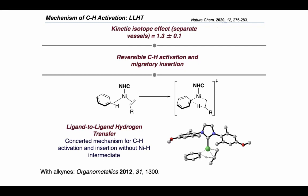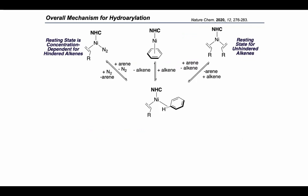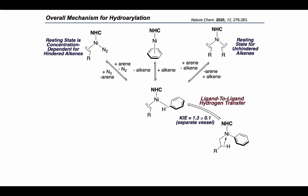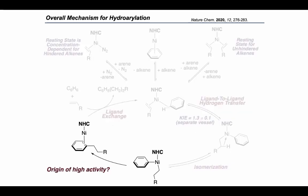LLHT has previously been proposed in the hydroarylation of alkynes with phosphine-ligated nickel catalysts. To summarize the mechanism for the hydroarylation based on our experimental results: there are a variety of arene- or alkene-bound resting states that exist in solution based on the identity and concentration of the alkene reactant. These all eventually funnel into a mono-alkene mono-arene complex, which undergoes LLHT to form a nickel(II) complex. This nickel(II) complex can isomerize to a T-shaped geometry and then undergo rate-limiting reductive elimination to form the carbon–carbon bond. The alkyl-arene product then dissociates to close the catalytic cycle. However, after all this, we still haven't answered our original question on the origin of the high activity of this NHC-ligated nickel catalyst.